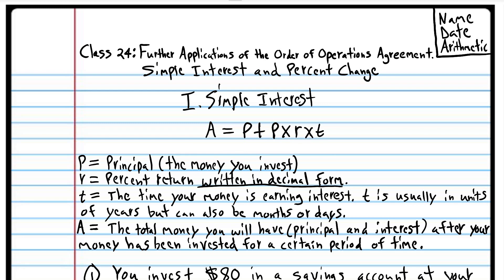We talked about putting $100 in the savings account. The $100 is called principal — that's P in the formula. A is the total amount that you make after one year, so that's $101 in our example. That's what we're trying to calculate with this formula — the total amount you'll have in your account. So $100 plus $1 is $101. That's A.